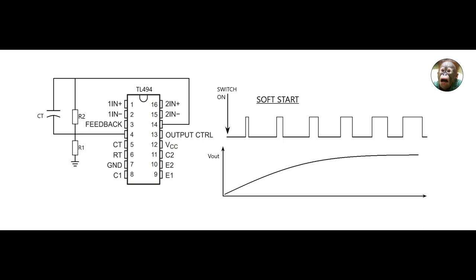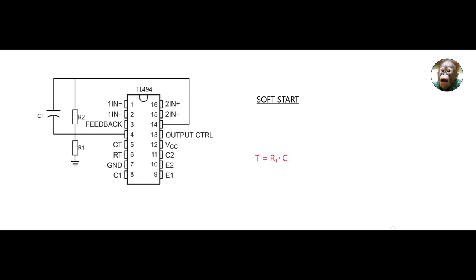To implement soft start, you can use the circuit I've shown here. The two resistors form a potential divider circuit which applies a particular voltage to pin 4. When the chip is initially switched on, the timing capacitor CT is empty, which forces the voltage on pin 4 to be high, and that forces the output pulses to be small. The timing capacitor then slowly charges through resistor R1, making the voltage at pin 4 go to zero, and as it does so, the output pulse width increases. The time which the soft start lasts for, T, depends on the product of the values of the timing capacitor and the R1 resistor.